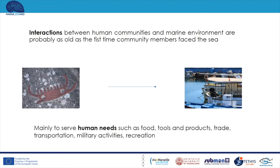Interactions between human communities and the marine environment are probably as old as the first time community members faced the sea. These interactions mainly serve human needs, including nutrition by consuming marine animals or producing oil, and the production of tools from parts of marine animals such as their bones. People also used the leather of marine animals. Coastal communities were the first to develop trade, exchanging products through the sea, and also transported weapons during periods of war. Additionally, the marine environment provides places for recreational activities, from swimming to fishing.